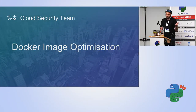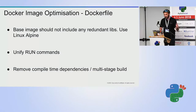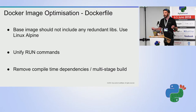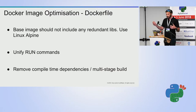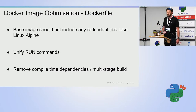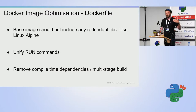Let's talk about Docker image optimization and why we should handle it. First, we want shorter build times. We want short upload and download times to and from the registry. And importantly, your image will be less vulnerable — if you use Linux Alpine as your base image and install only what you need, you have fewer modules and packages installed, reducing your attack surface.